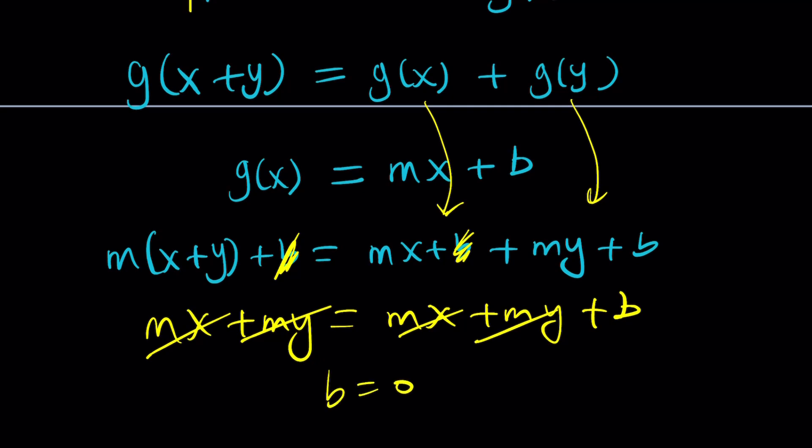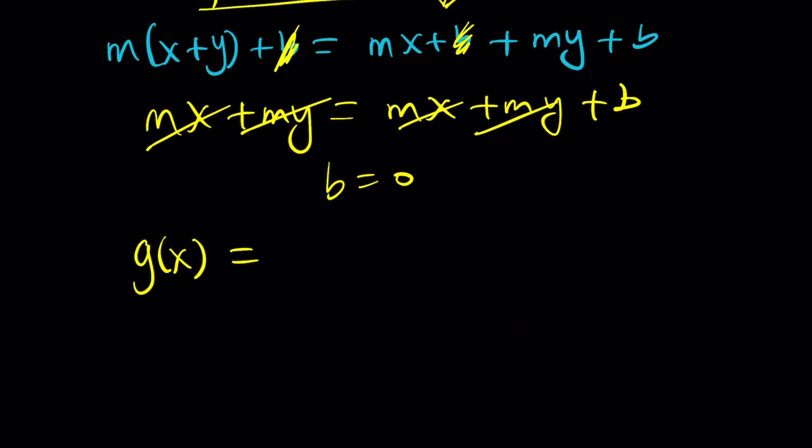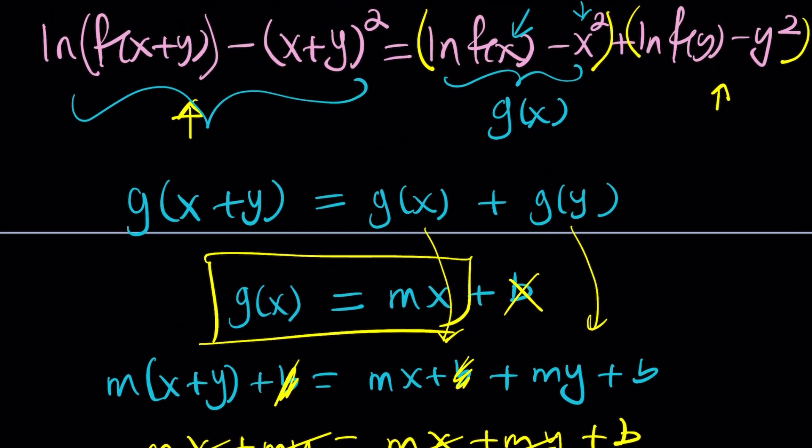So there should be no b there, which means g of x is expressible as mx. It is a linear function, but the graph needs to go through the origin. It needs to contain 0, 0. So g of 0 is 0, in other words. And if you plug it in actually here, if you replace g of 0 with 0, this is not a problem because we're not saying f of x is 0, we're just saying x in g of x is 0.